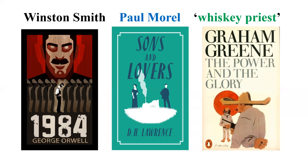D.H. Lawrence's Sons and Lovers is often read as a manifestation of Freud's concept of the Oedipus complex. Paul Morel is very much attached to his mother, and towards the end of the novel the mother dies and Paul has to start a new life and move on.